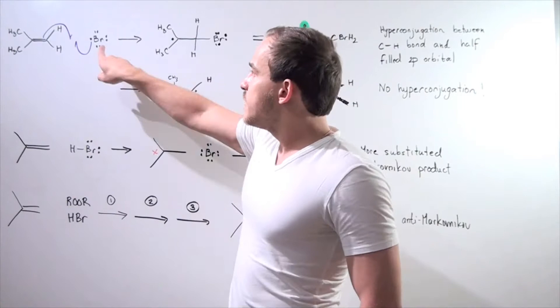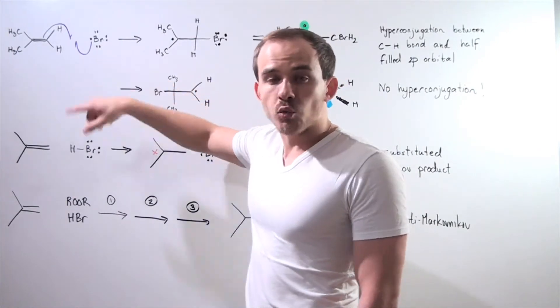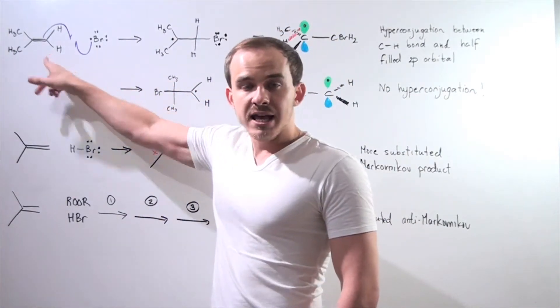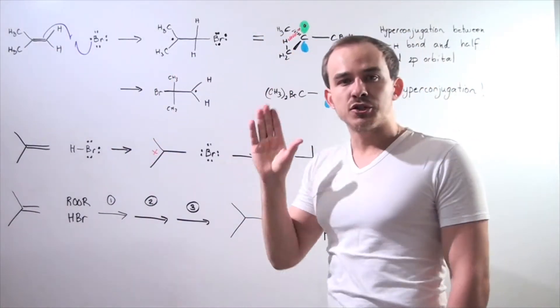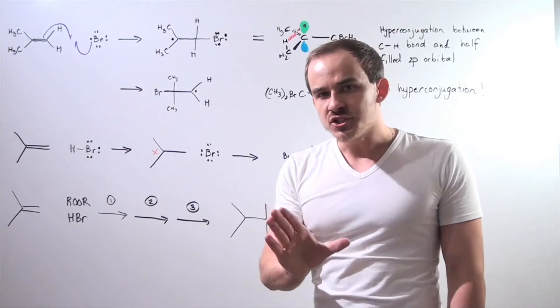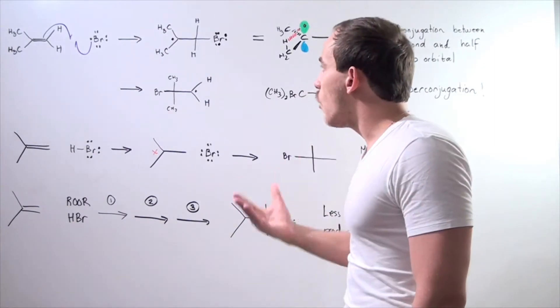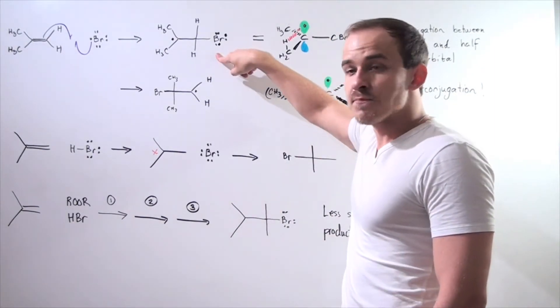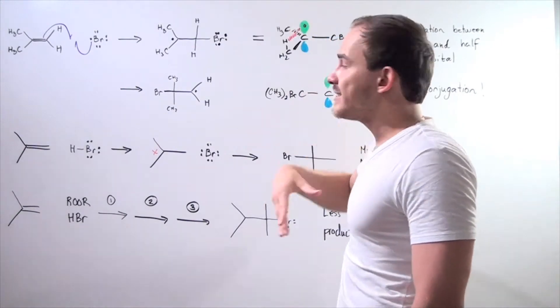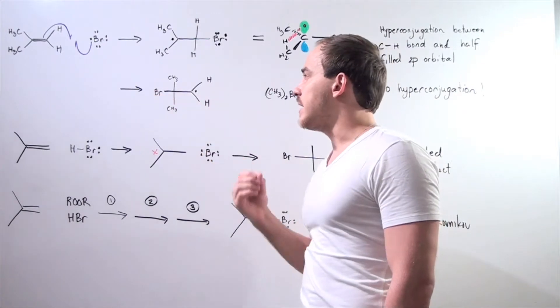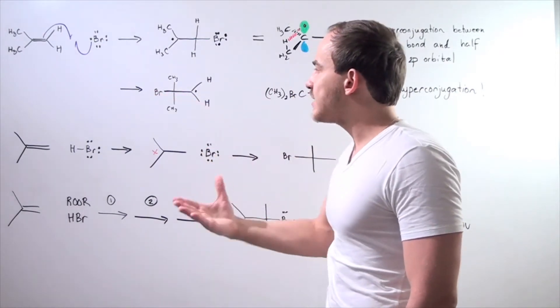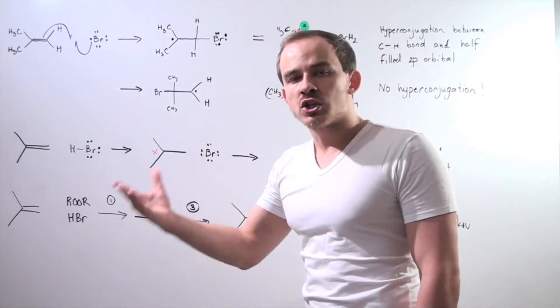Now, this chain-carrying radical reacts with an asymmetrical alkene in the propagation step to form the following intermediate. My question is, why do we form this intermediate on which the bromine is attached to the less substituted carbon, and not this intermediate where the bromine is attached to the more substituted carbon?